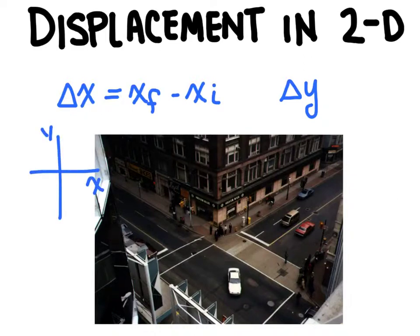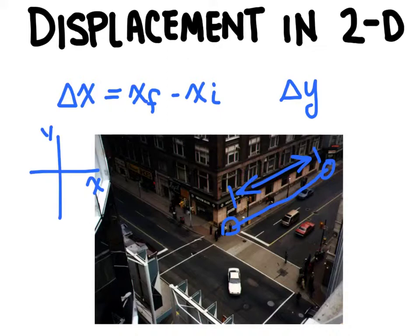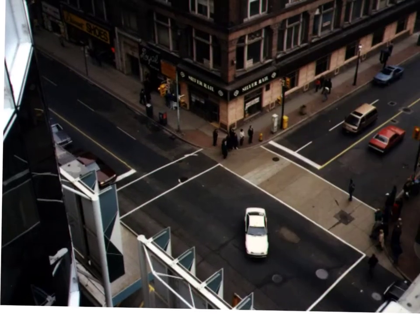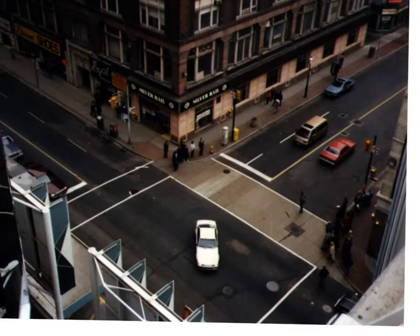Now if you look at this picture, you can imagine this as if we started in one position on the street and started walking along the street, then ended in a final position. Our displacement would be this difference right here. It's important to note that displacement is not the same as distance. With displacement we don't see all of the travel in between — we really only see the initial point and the final point.